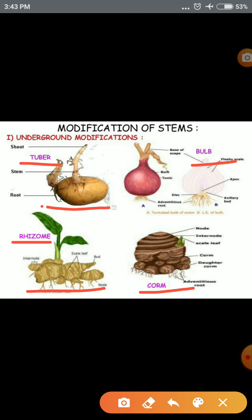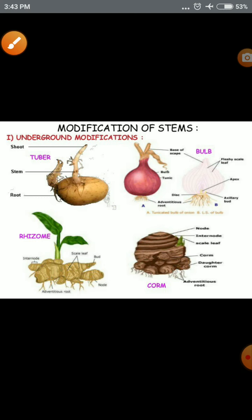The corm is a condensed, solid, fleshy underground part. This is another underground modification of the stem.